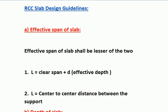Guideline point number 1: Effective Span of Slab. The effective span shall be the lesser of two conditions. First condition: length equals clear span plus small d, where small d is the effective depth. Second condition: length equals center-to-center distance between the supports. This is how you calculate the effective span of slab.